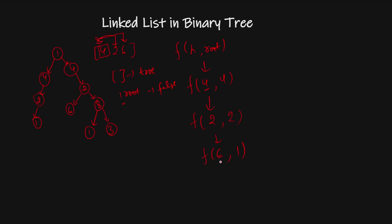From node 6, I call with head=6 and root's child=1, which doesn't match, so it returns false. The right child is null, so that also returns false. Both left and right return false, so this path returns false overall.